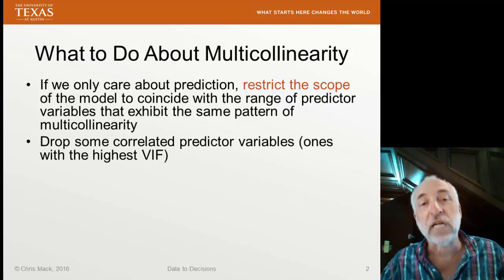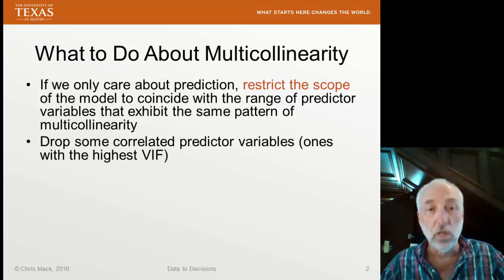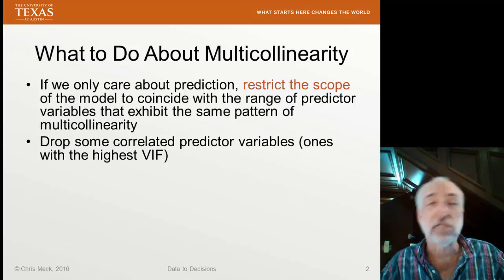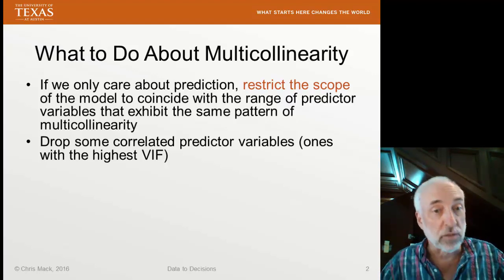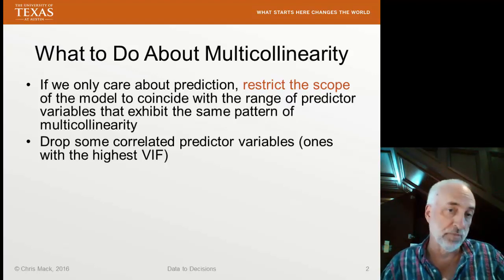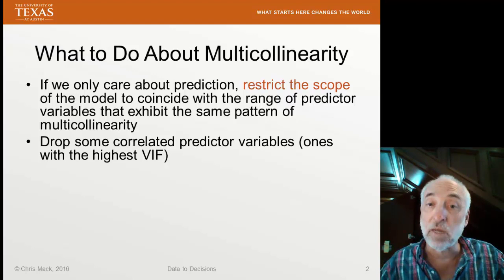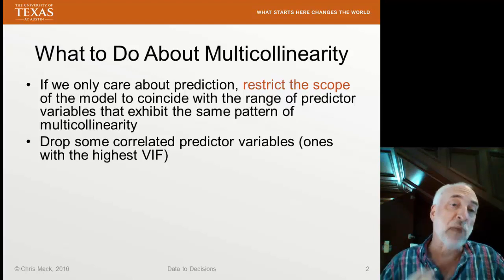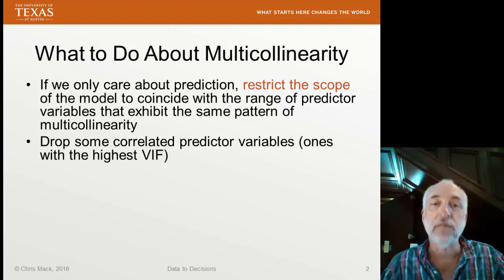Another thing: if we have some very high variance inflation factors for some variables, we can simply decide to get rid of those variables from our model. After all, if we have a very high variance inflation factor, that means one variable is highly correlated with the other predictor variables, and if we drop it, we still have most of the same information present in the remaining predictors. So we begin by dropping the variable with the highest VIF, if it's very high, and see how well our model performs and whether most of the multicollinearity problems have disappeared. This is probably the most common solution when you've got plenty of predictor variables and one of them has a very high VIF.